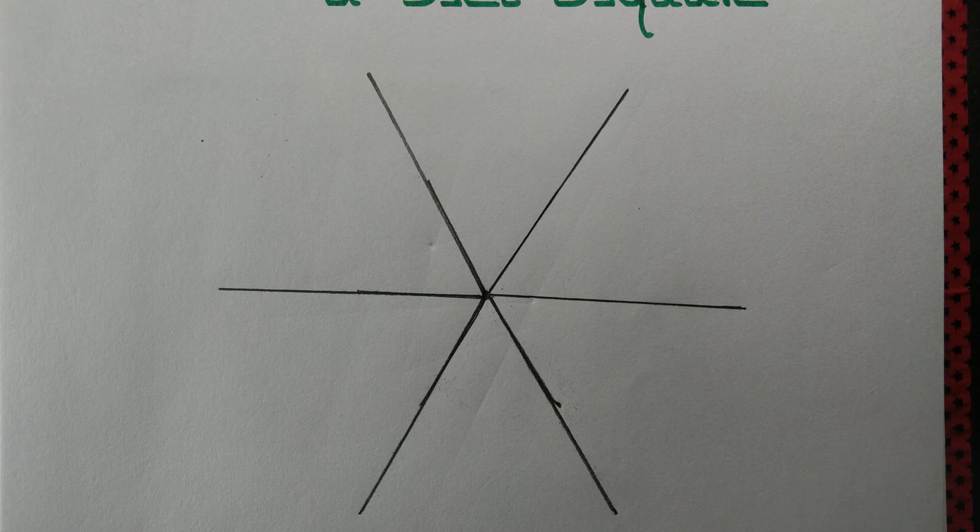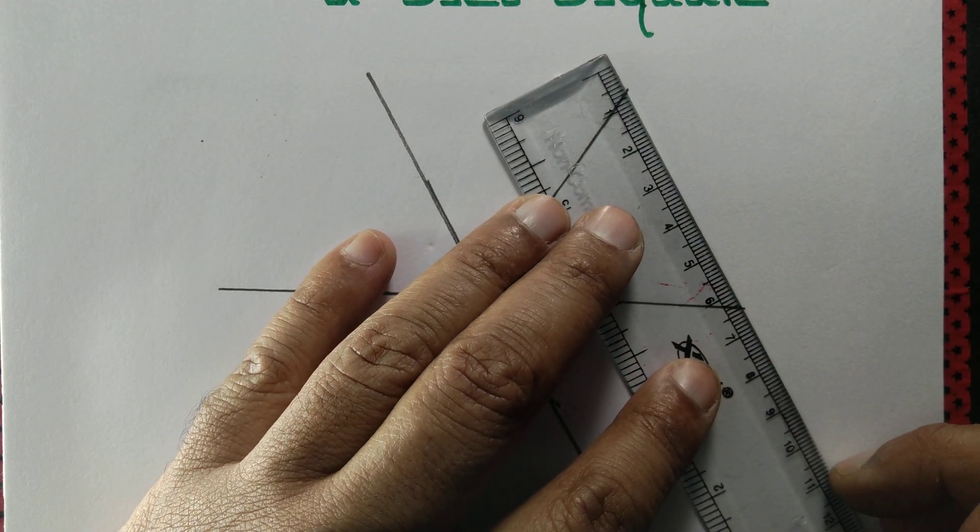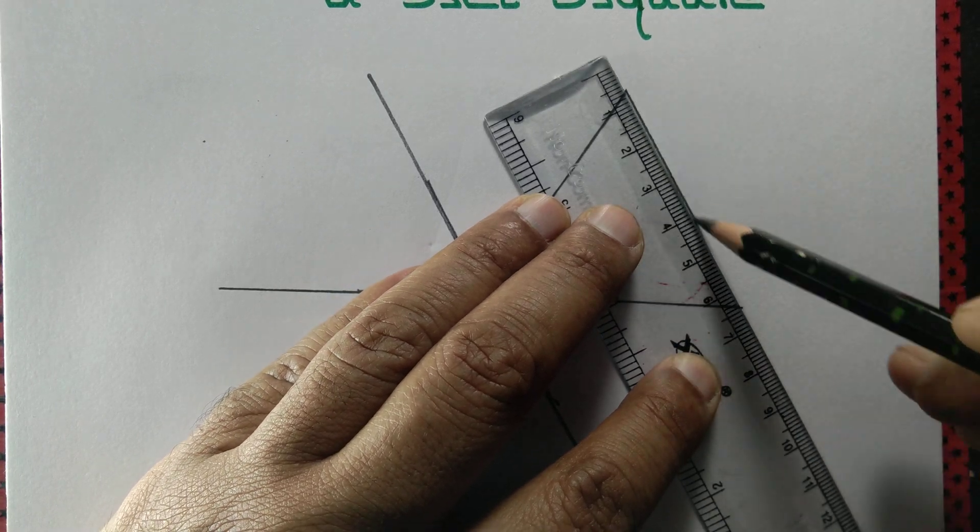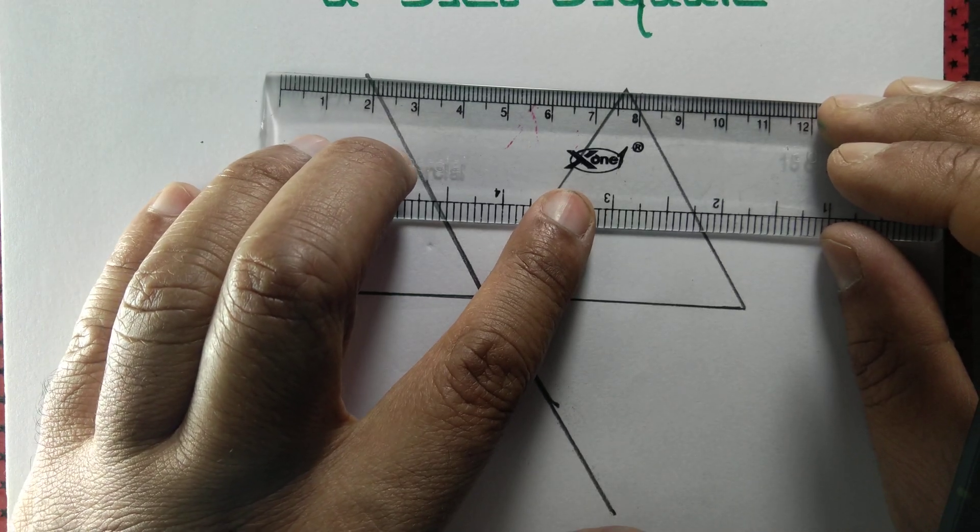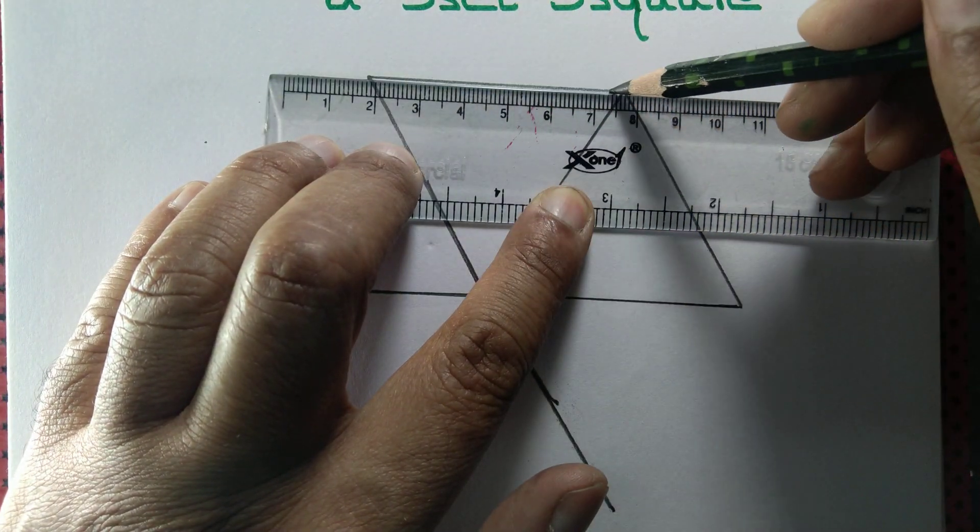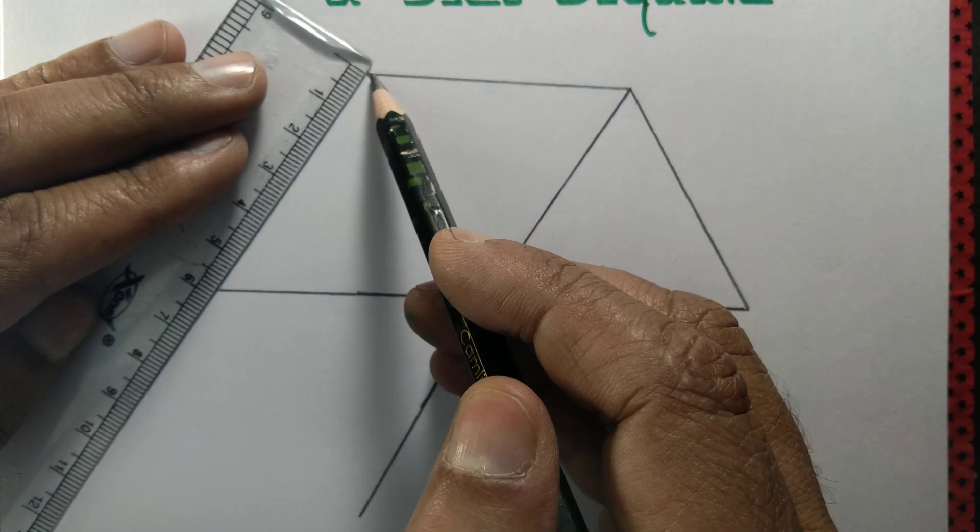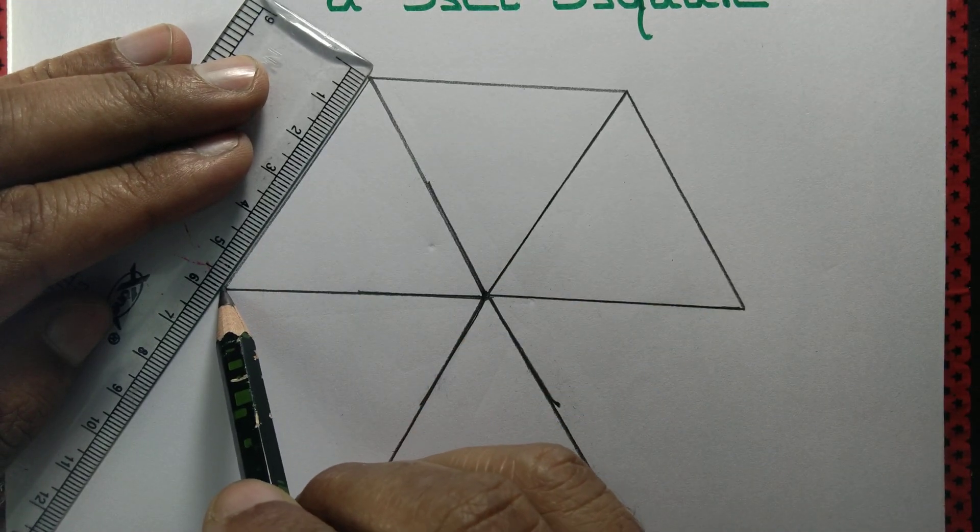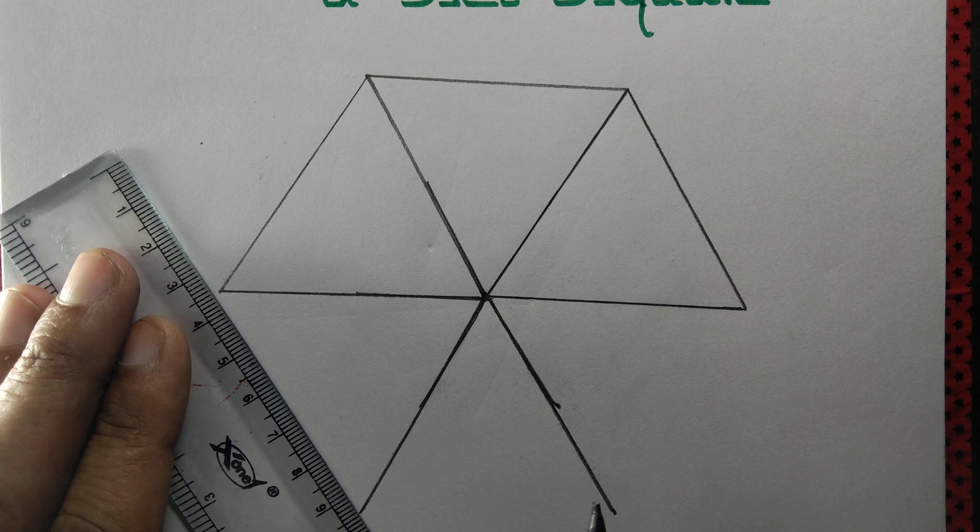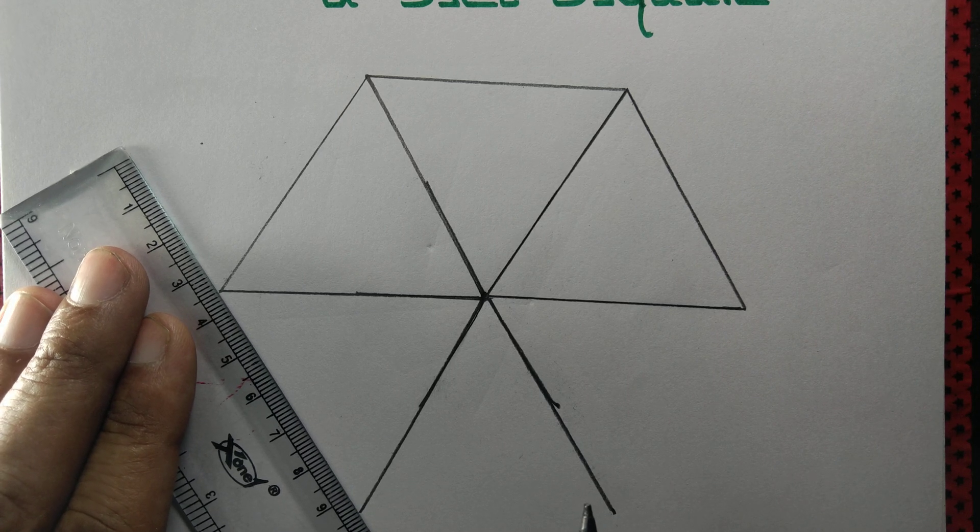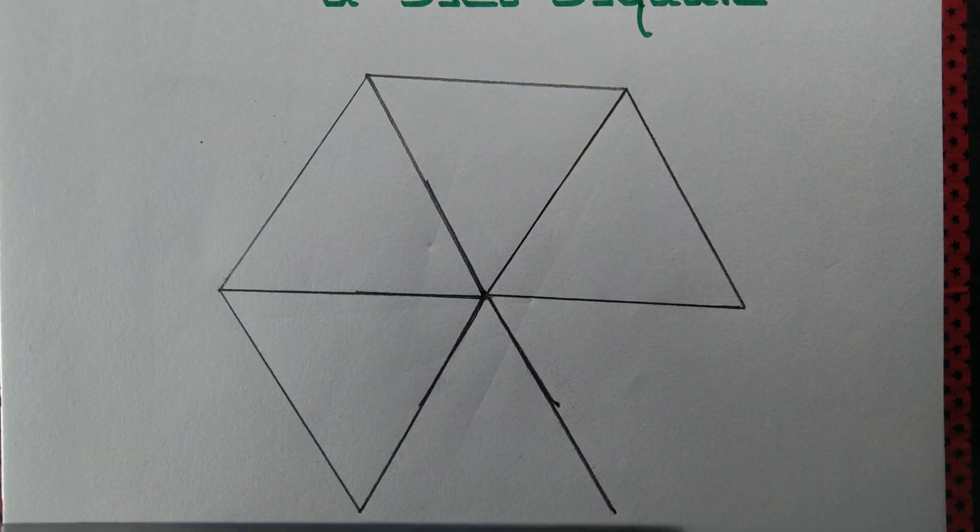Let us join the endpoints of the line segments or endpoints of the arms of the angles. One, two, three, four. We got four sides.